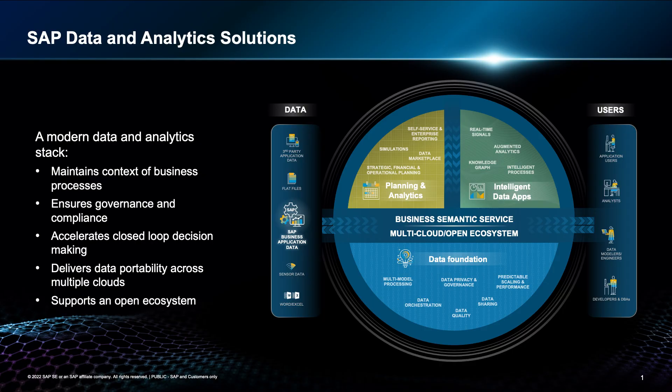In summary, the SAP Data and Analytics strategy is based around five key pillars: number one, keep things in context; number two, respect governance and compliance with a strong engine; number three, the closed loop of analytics with BI, planning, and predictive analytics coming together; number four, portability — you choose the hyperscaler of choice; and number five, the very strong SAP ecosystem around data and analytics. I hope you liked this episode of the SAP Business Technology Talk, and I'm looking forward to seeing you in the next episode. Thank you so much.